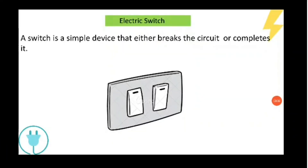Our next topic is the electric switch, which we see in our houses. It is a simple device that can break or complete a circuit. If you switch off, the circuit breaks and the light will not glow. When you switch on, the circuit is completed and the light will glow. This is the concept of the electric switch.